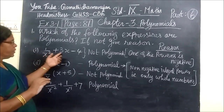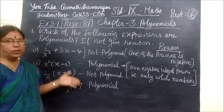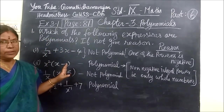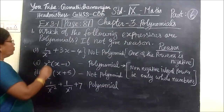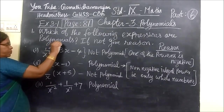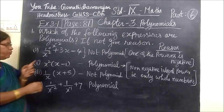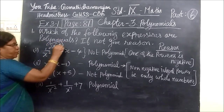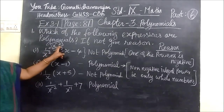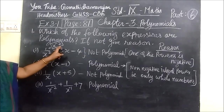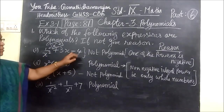You see the first one: 1 by x squared plus 3x minus 4. Whether the following are polynomials or not — if not, give the reason. The first one is 1 by x squared plus 4. You can write it as x power minus 2. When x is in the denominator and you take it to the numerator, it is x power minus 2. Since minus 2 is negative, the given expression is not a polynomial.